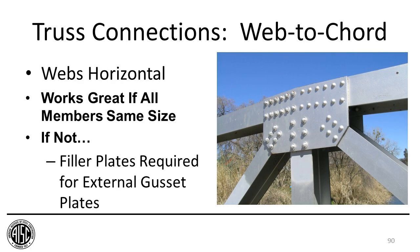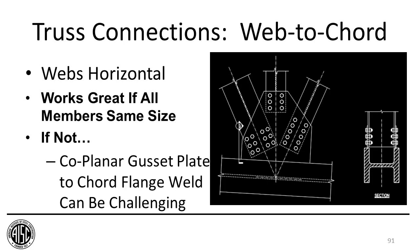You can also orient wide flanges with the webs horizontal. This works great if all the members are exactly the same size — if not, you have to ask where the filler plates are and make sure you've considered that in your connection details. Another way to connect would be to weld the gusset directly to the flange. This works sometimes when member geometries work out just right; however, if you're varying your webs while the chord isn't varying, you can often run into a case where the gusset plate doesn't sit nicely on the flanges of the chord.